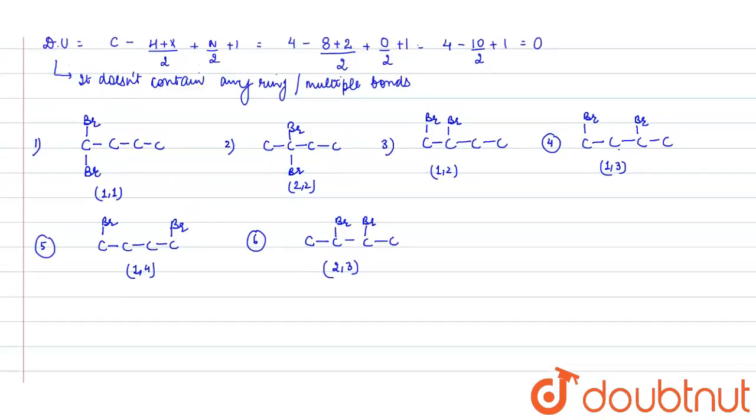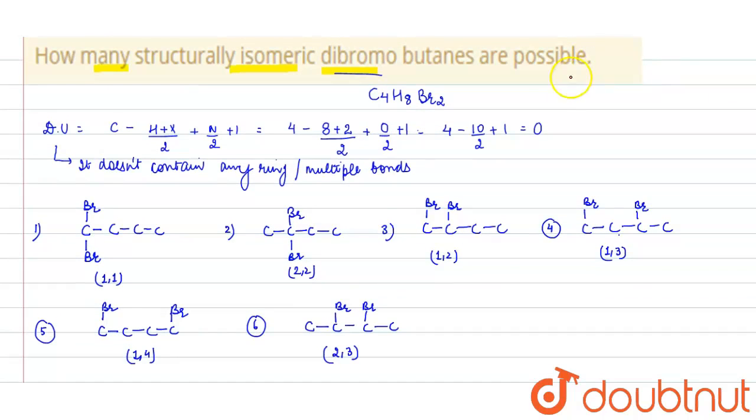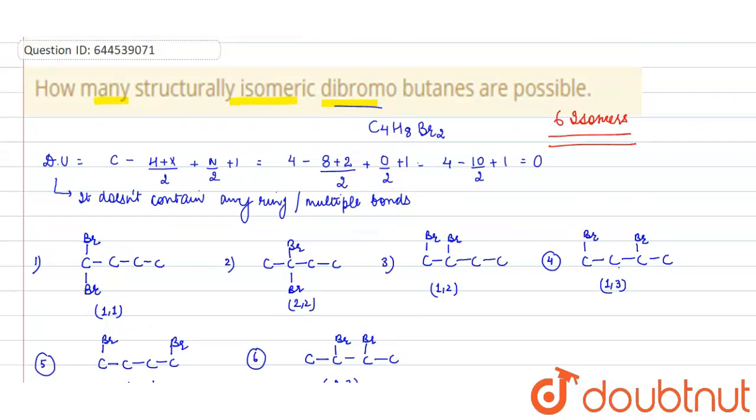So here you can see how many isomers are possible. Six isomers are possible. So your answer will be six isomers. Okay, thank you.